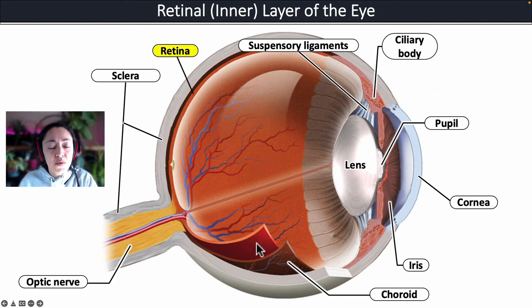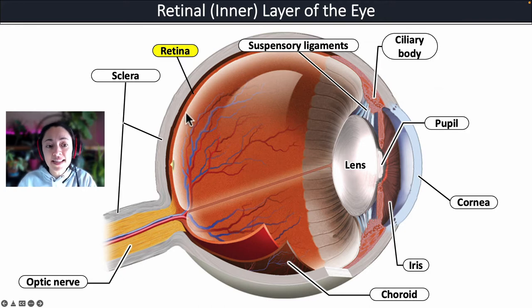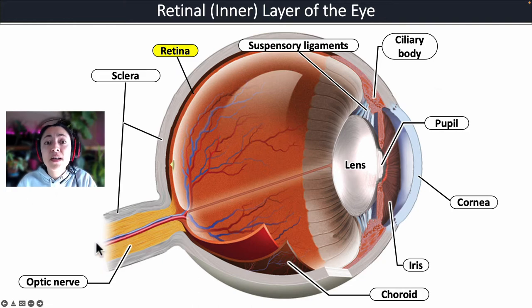The retina contains photoreceptors and neurons that are important in absorbing light and then sending nerve signals down the optic nerve to the brain.